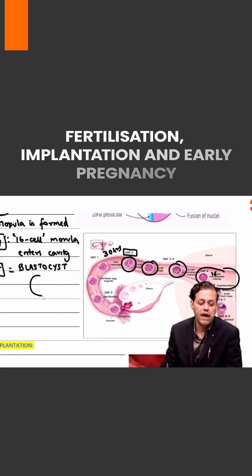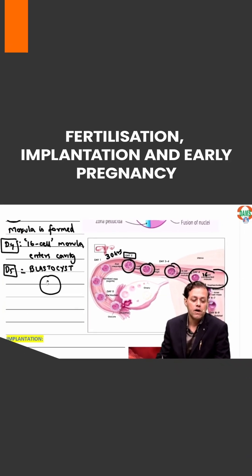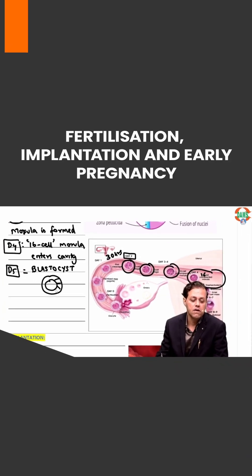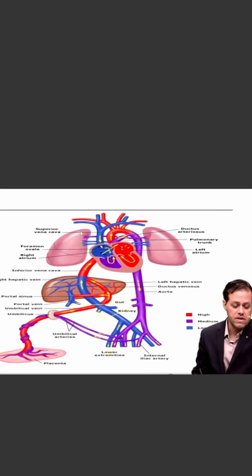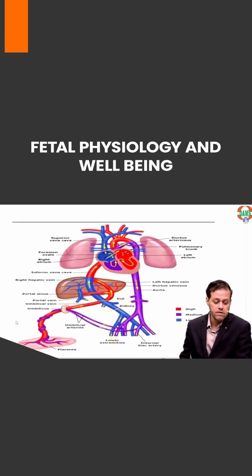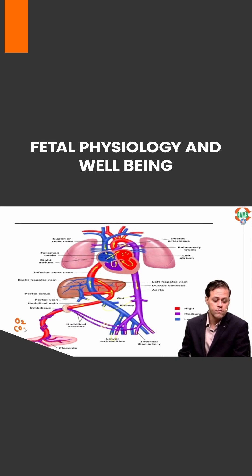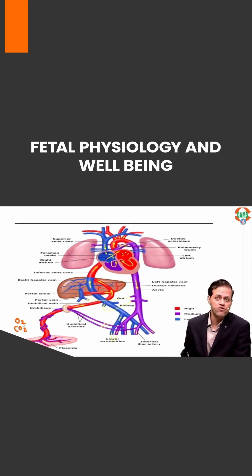The blastocyst will have outer cells forming the trophoblast — 53 cells forming the outer cell layer — and five cells forming the inner cell mass. The placenta is where the placental barrier exists, and O2 and CO2 pass by simple diffusion. O2 passes from mother to fetus, and CO2 passes from fetus to mother.